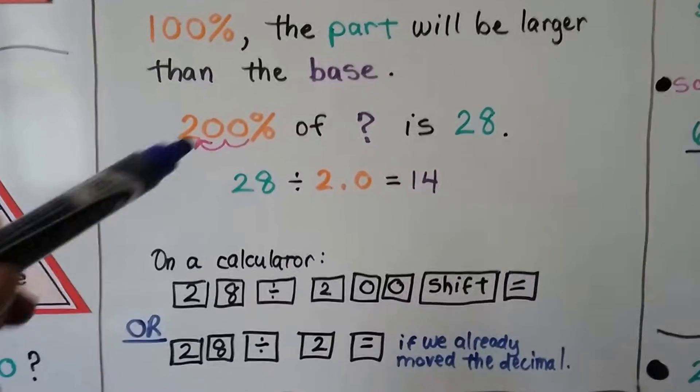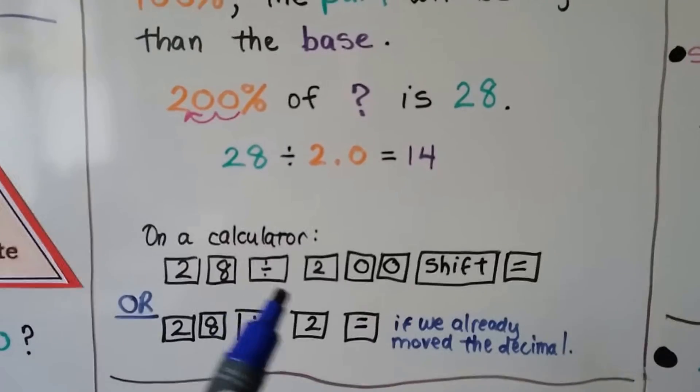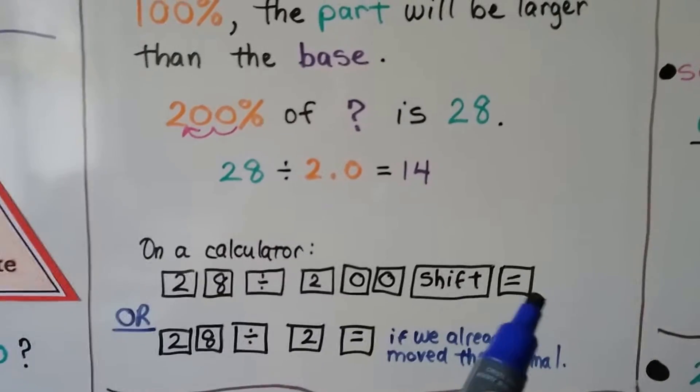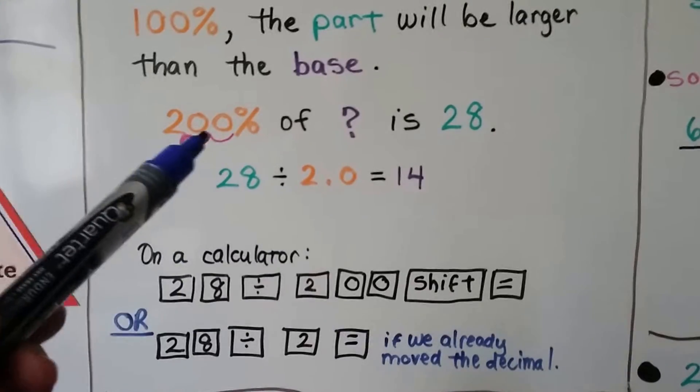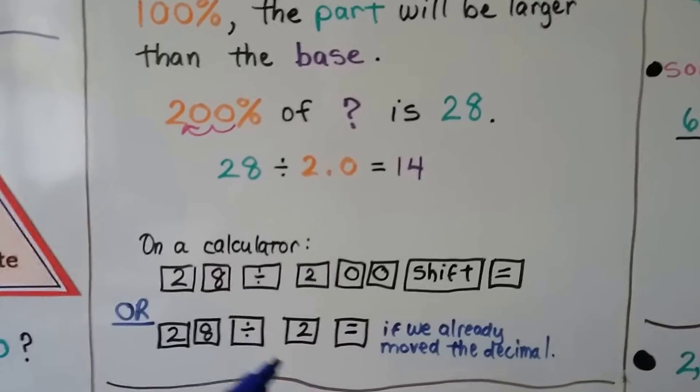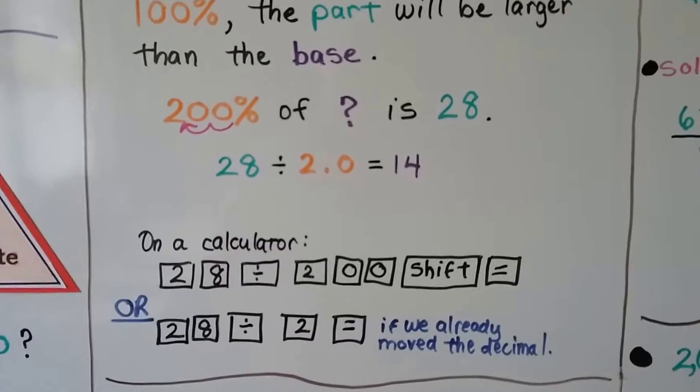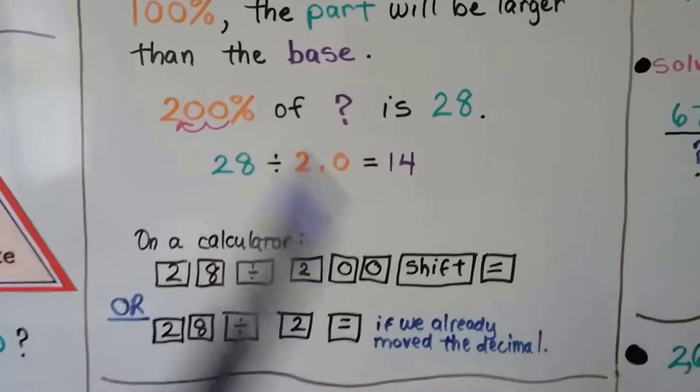On a calculator, if you don't move the decimal, you can just do 28, division sign, 200, shift equals, and it'll give you the 14. Or, if you did move the decimal and you know 200% is just a 2, you can just do 28 divided by 2 equals. The shift equals is when you're just putting 200 in as a percentage.